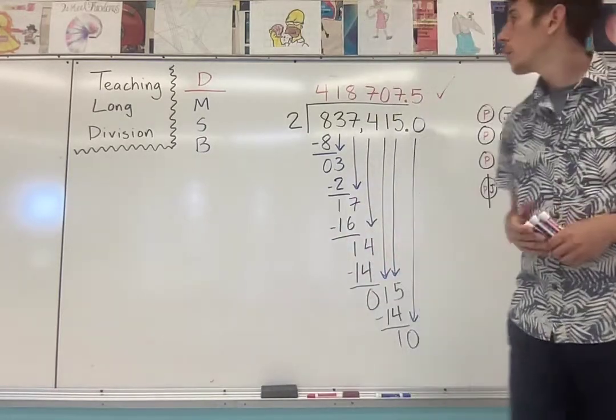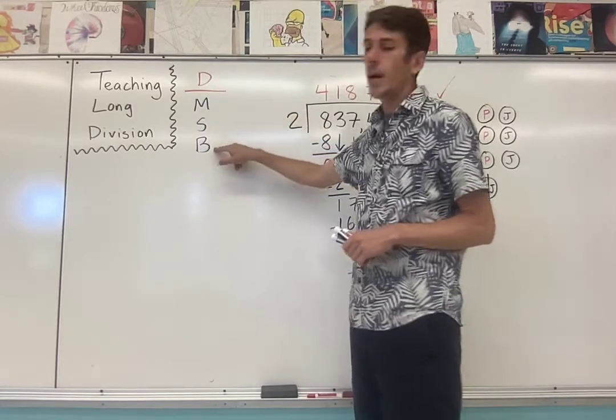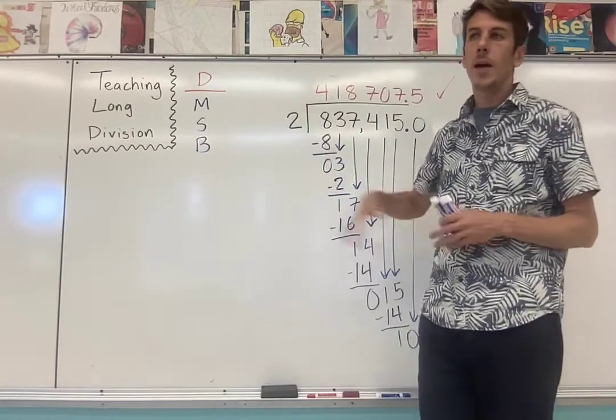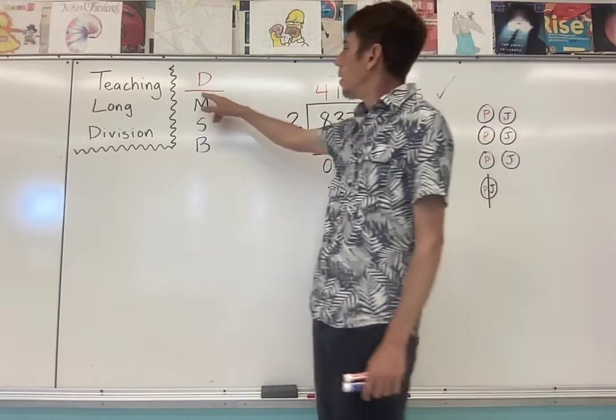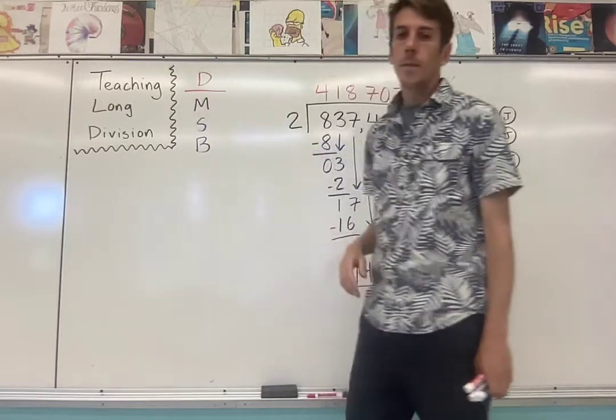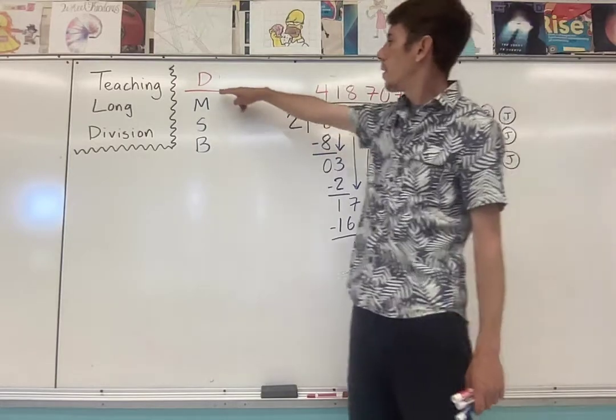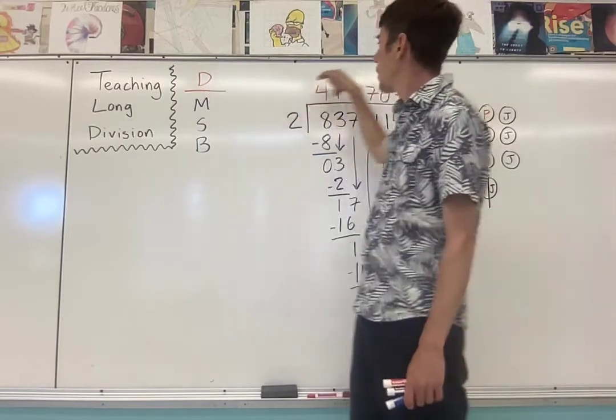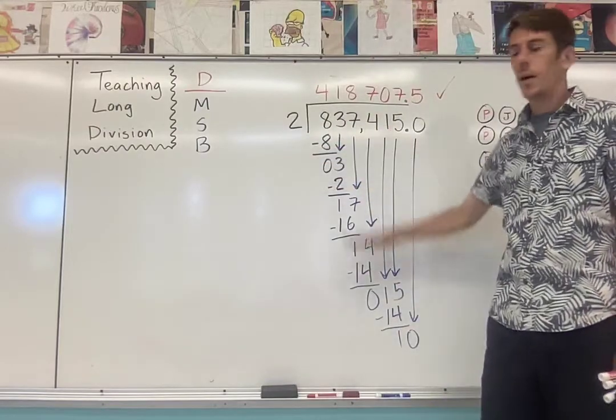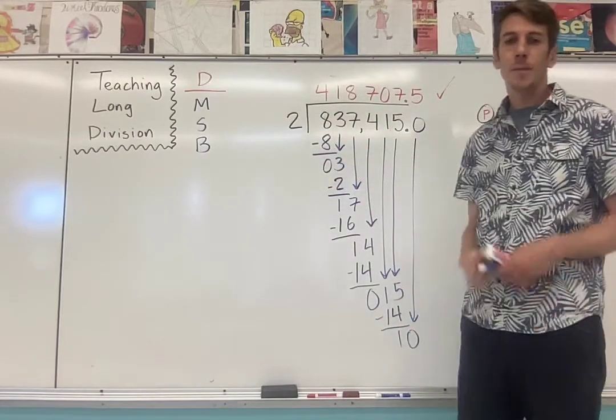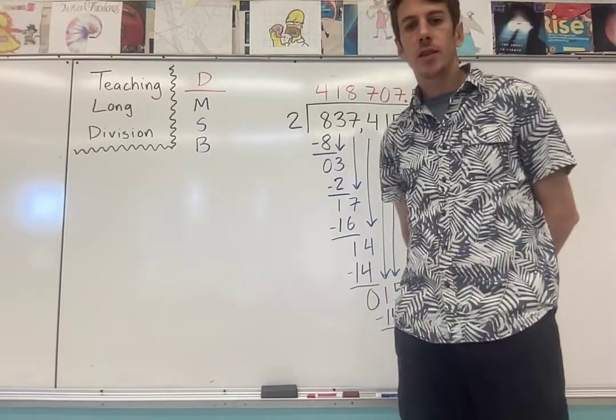So to recap, go over the acronym. Dead mice smell bad: divide, multiply, subtract, bring down. Have students write down that acronym at the top of the page when they're doing long division practice. If you have colors, color code it. D one color, MSB another color. Underline the D to remind yourself that this step happens up above the garage. These other three steps all happen below ground. They're subterranean steps. So those are some tips for teaching long division.